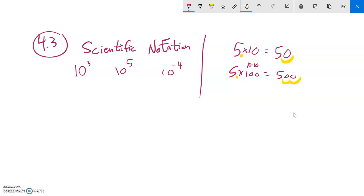Or 5 times 100, it's been moved over twice. And thinking about that, like 10 to the third, that would be three 10s multiplied together. Or 10 to the fifth, 1, 2, 3, 4, 5. 10 to the negative fourth, it's going to go this way because you're dividing by 10 four times. So 1, 2, 3, 4.